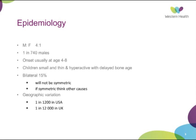The epidemiology: males are affected four times as commonly as females. Incidence is about 1 in 740 to 1,000 in Australia. Onset is usually between four and eight years. Children are typically small, hyperactive, with a delayed bone age. It is bilateral in about 15%, normally not symmetric — one hip is usually worse than the other. If it is symmetrical, you would think about other causes of the pathology.